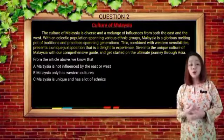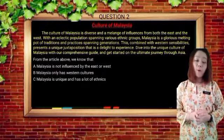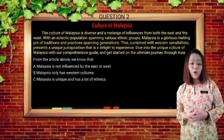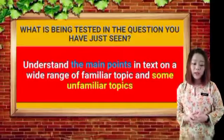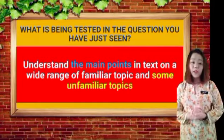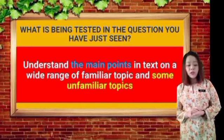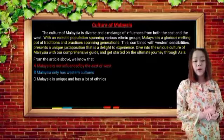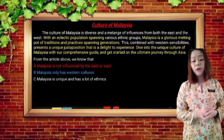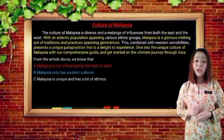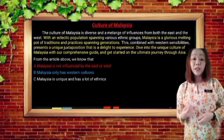Now let's look at question number two, which is about the culture of Malaysia. The question asks: from the article above, we know that... This tests whether you understand the main points in the text on a wide range of familiar topics. Option A states Malaysia is not influenced by the East or West. However, from the text, Malaysia is diverse and a blend of influences from both the East and the West. Therefore, A is incorrect.